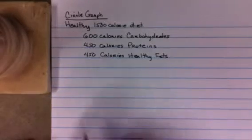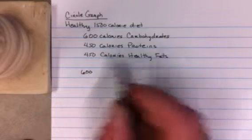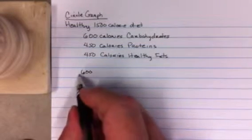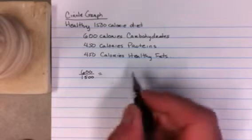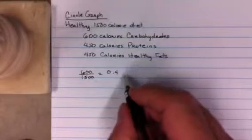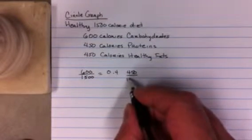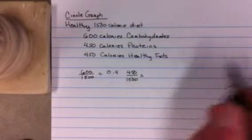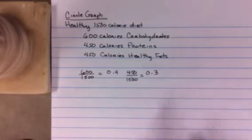The first step is to figure out the fraction that represents carbohydrates. There's 600 calories that are carbohydrates out of 1500 total. When we divide that out, we get 0.4. When we do the same thing for proteins, 450 divided by 1500, we get 0.3. And the healthy fats are exactly the same, so that would also be 0.3.